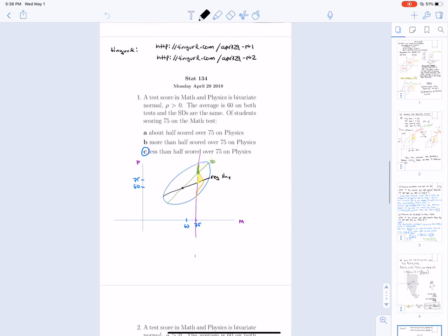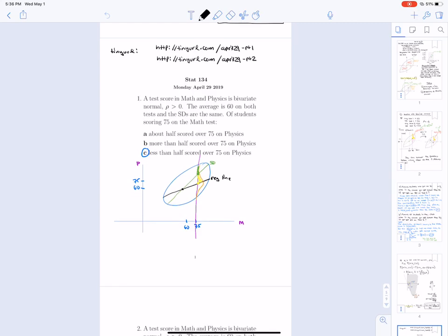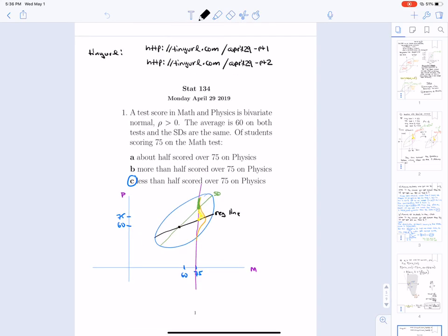We then did a concept test question, testing your understanding here. And so a test score in math and physics is bivariate normal. Rho is greater than 0. The average is 60 on both tests and the standard deviations are the same. A student scoring 75 on the math test. It's true that less than half scored over 75 on physics.